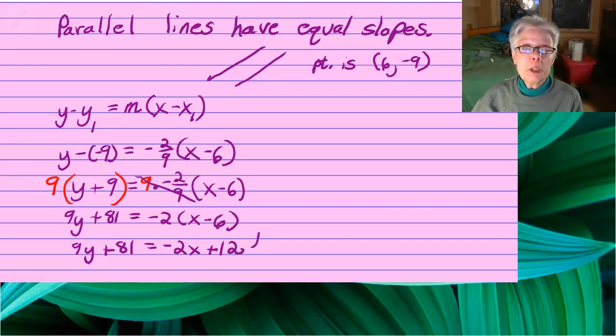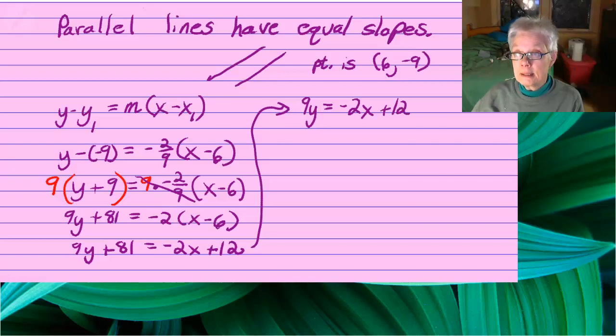Which will give me 9y plus 81 equals negative 2x plus 12. Remember, negative times negative is positive.